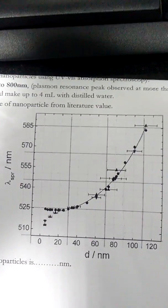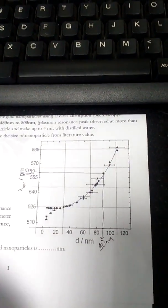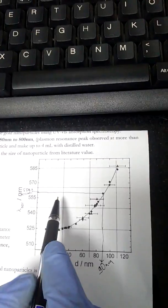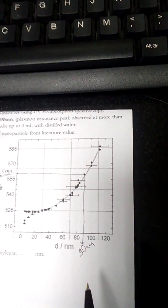To calculate the average diameter of synthesized gold nanoparticles from the graph, the average diameter of these gold nanoparticles is 90 nm.